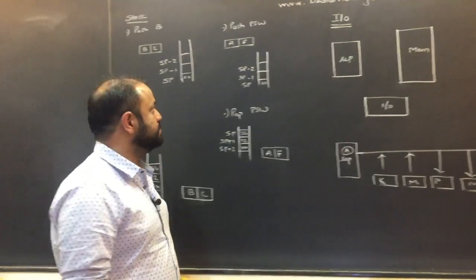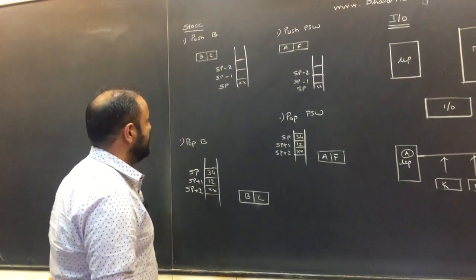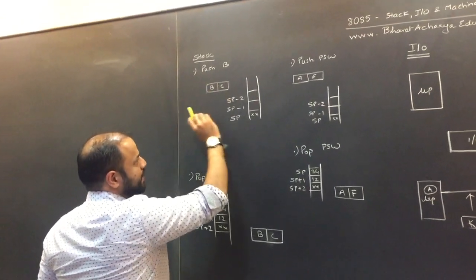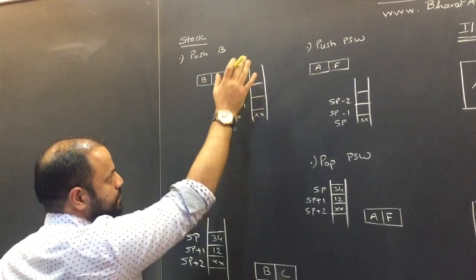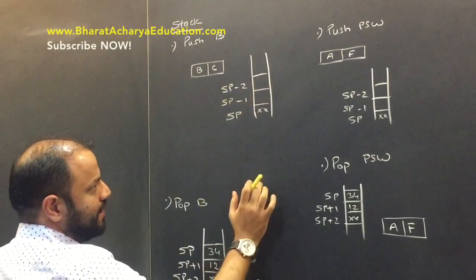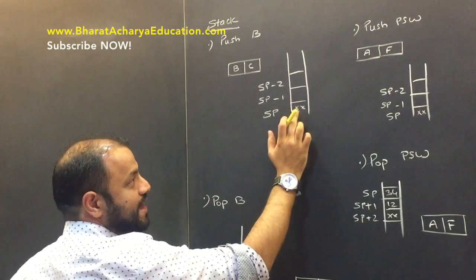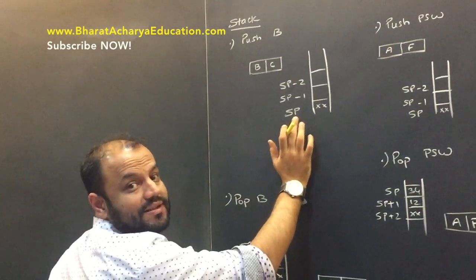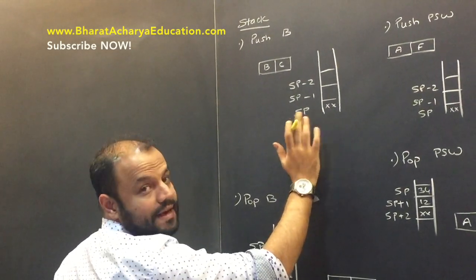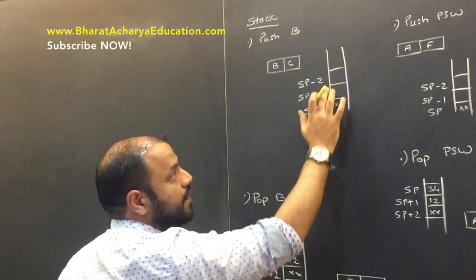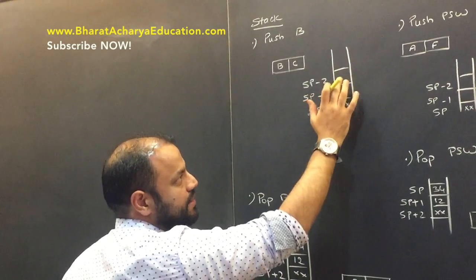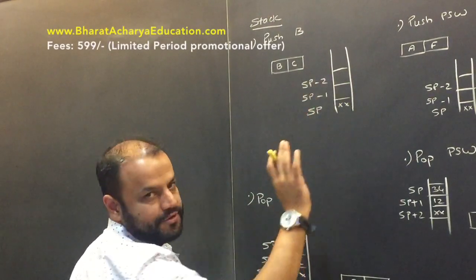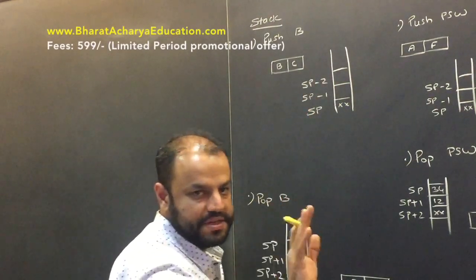So we are writing push B. When I write push B, my intention is to push the value of BC pair into the stack. This is your stack — these are all elements of the stack. This is the top of stack pointed by the stack pointer. Stack pointer gives the address of the top of stack.